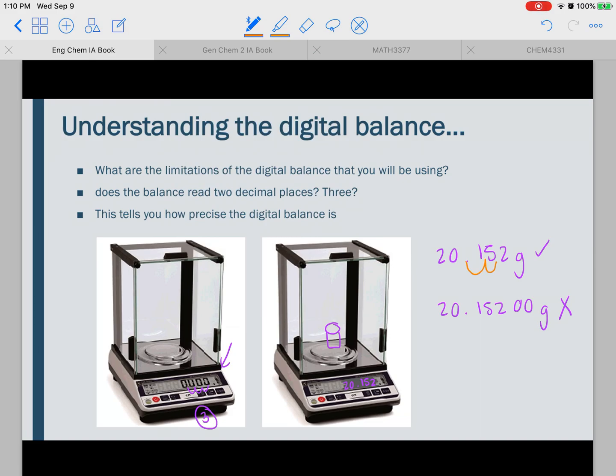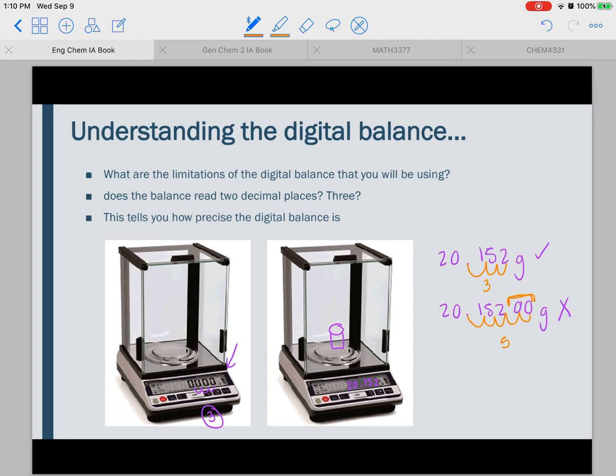What we would not want to write is like 20.15200 grams, and the reason we want to write this one and not that one is because when we look at our scale over here, we see that it's only accurate up to three decimal places. So on our measurement, we only want to have one, two, three decimal places. These last two zeros, we don't actually know if they're zeros. We don't know how accurate that is, and our scale doesn't tell us, and we don't want to assume. So only write down what the scale tells you.